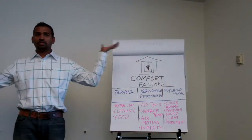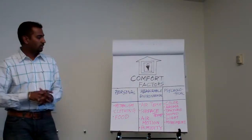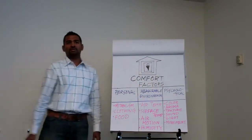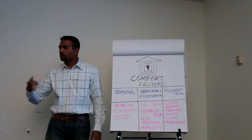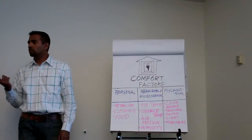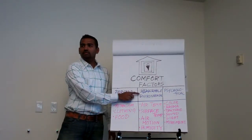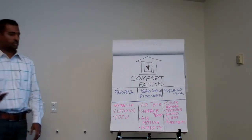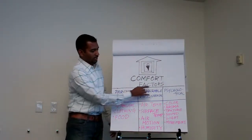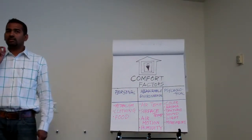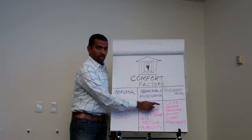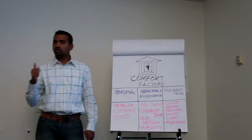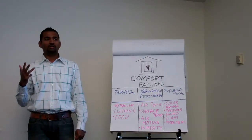Now that we understand the big picture of comfort, let's get into the building level. There are several factors that define comfort — three main categories. One: personal level, that's your food, drinking hot or cold water, whatever. Then the measurable environmental factors, for instance air temperature, air humidity, space temperature, radiant temperature, and surface temperature. And the last one is psychological — something we pay very little attention to. There's color, and we look at it from a design aesthetic standpoint, but not from a comfort standpoint as much as we should. There's color, aroma, texture, sound, light, and movement under those comfort factors.